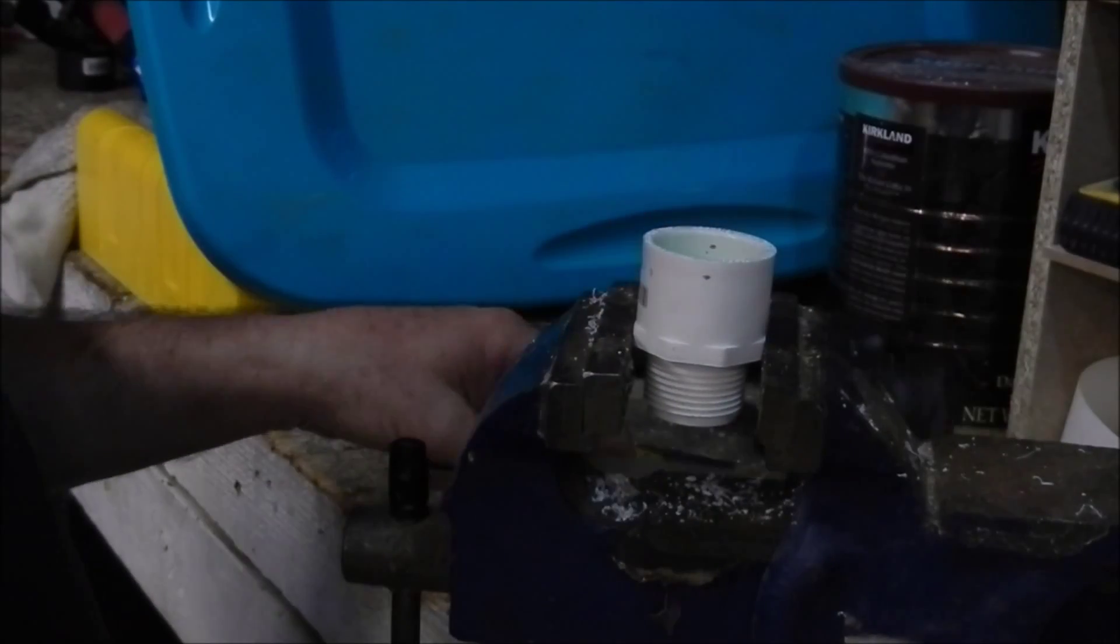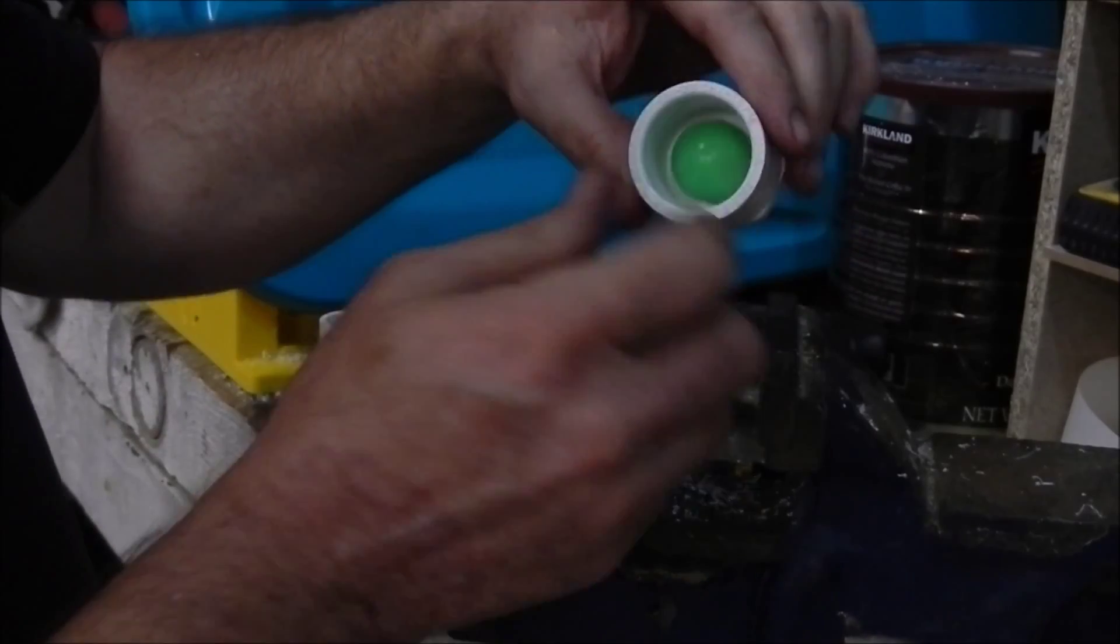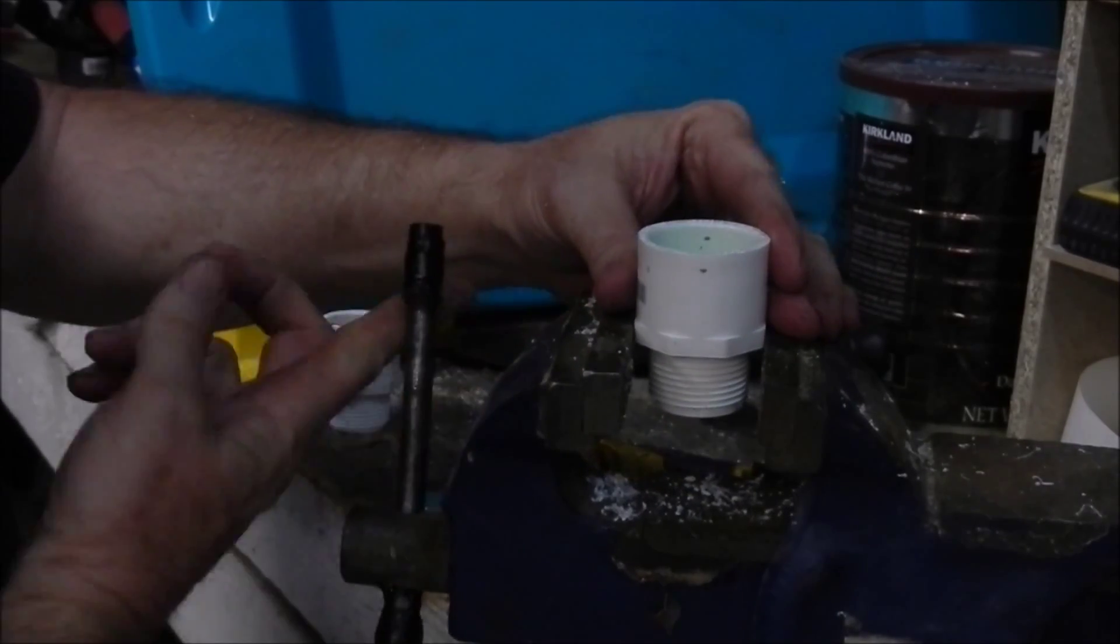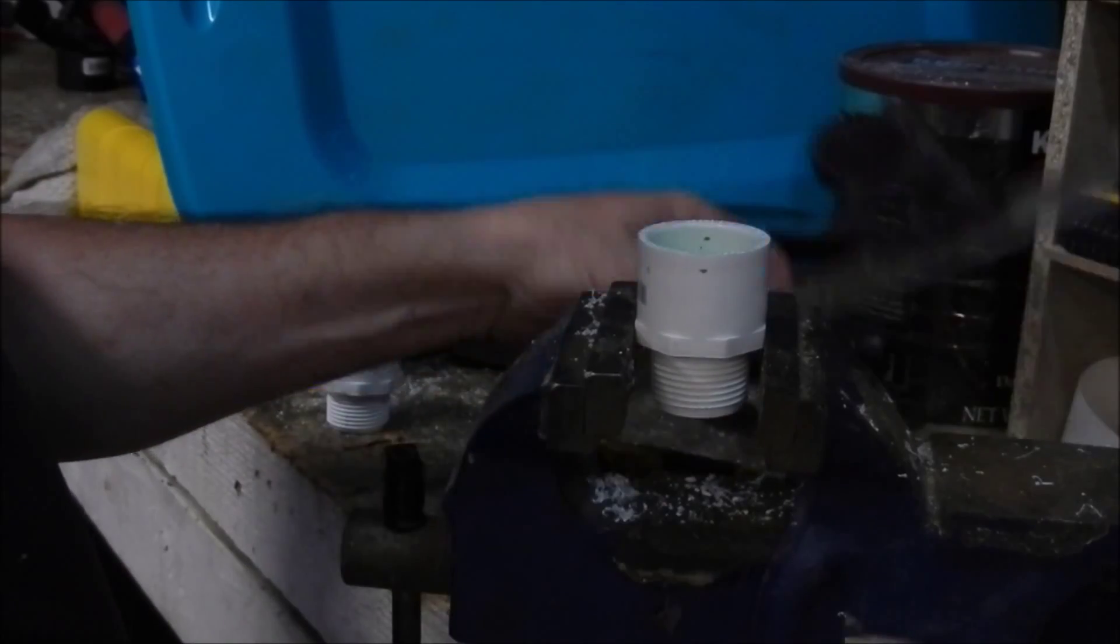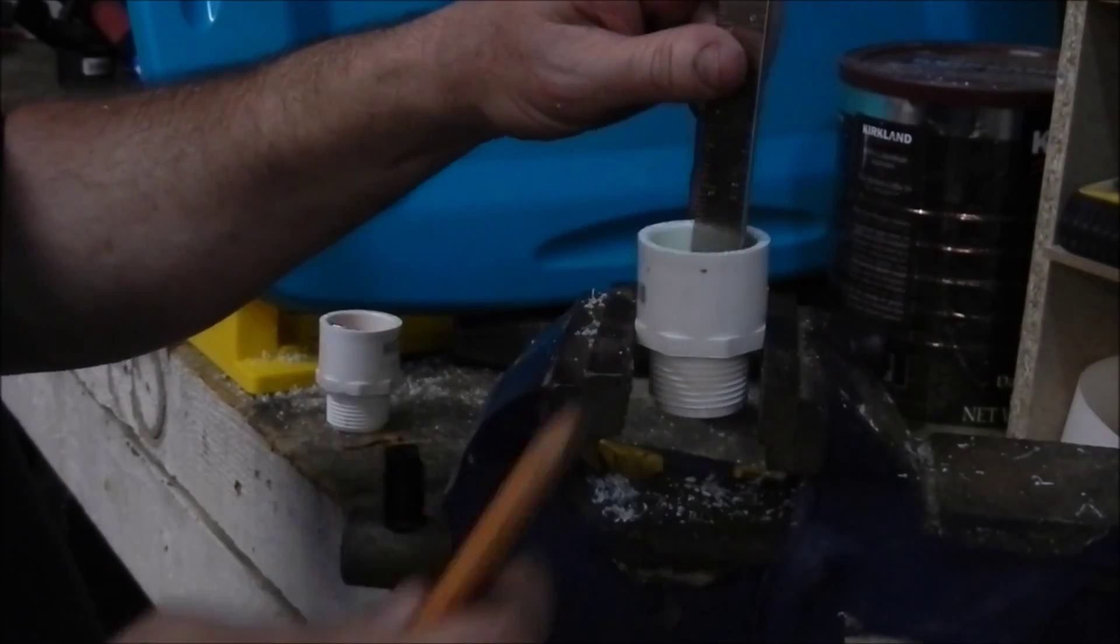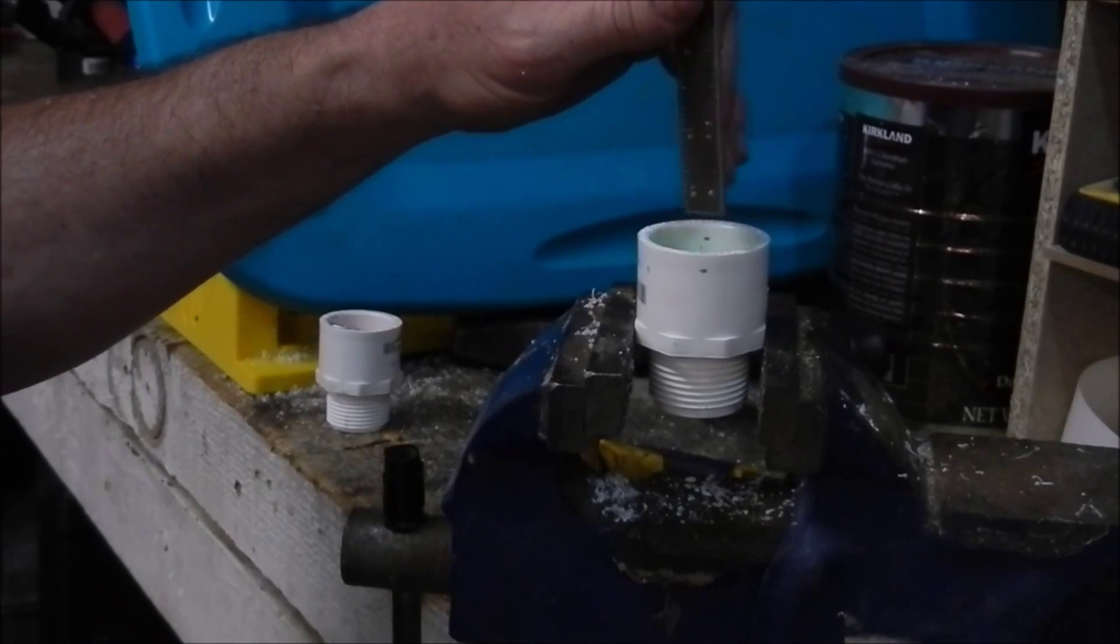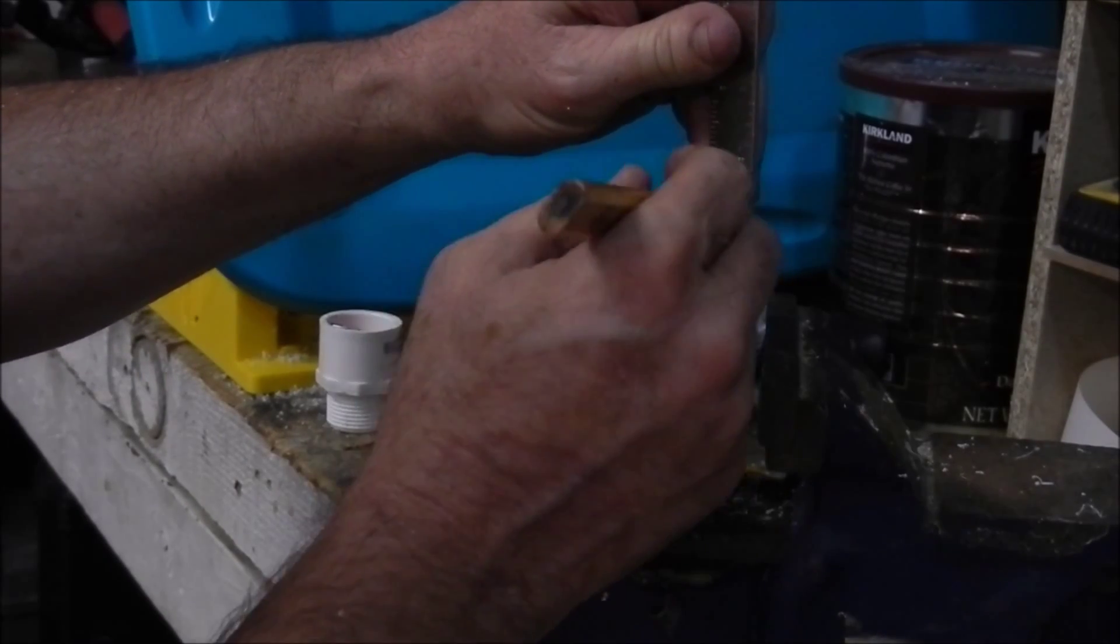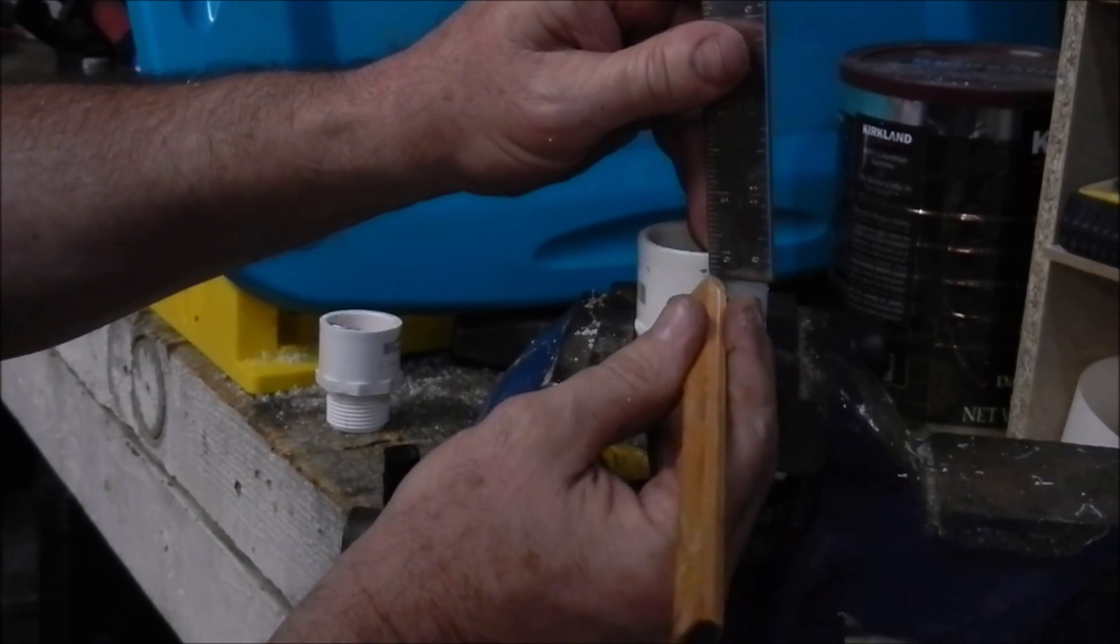Alright, I've got my little bouncy ball in there and this is going to be my one-way ball valve. Measuring from the top of the ball to the top of this is a half inch, so I want to go about a quarter inch down, make a mark in there and make a mark here quarter inch down.